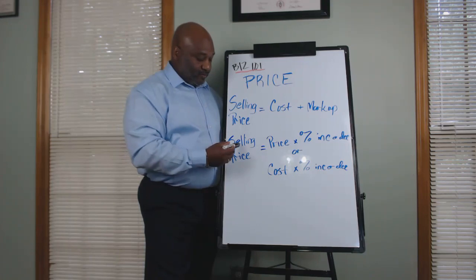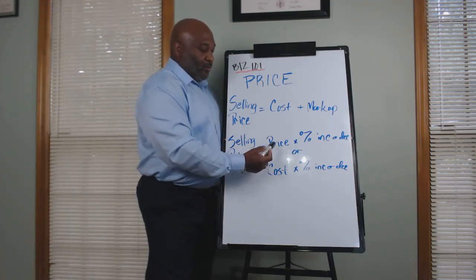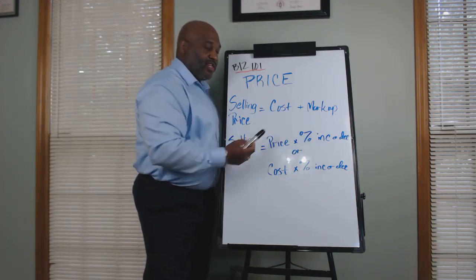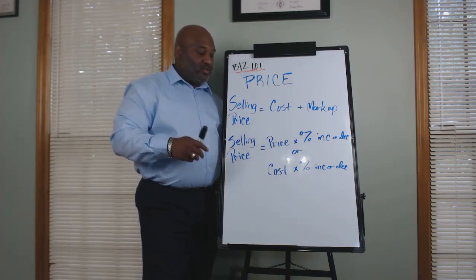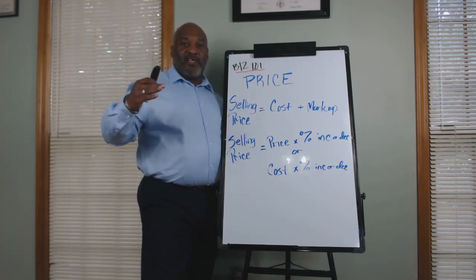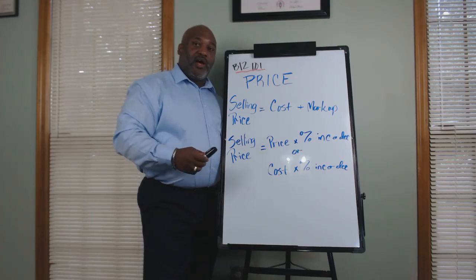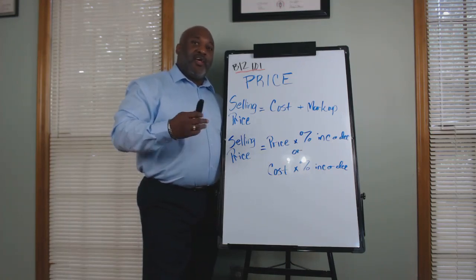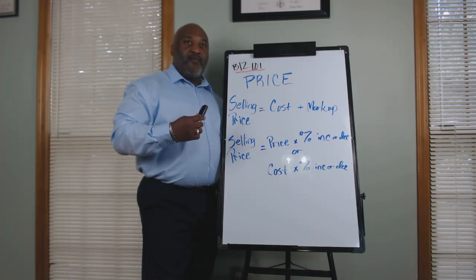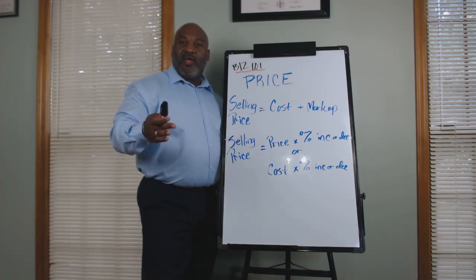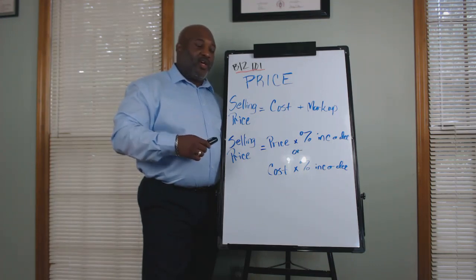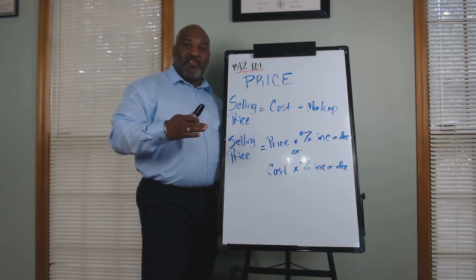The next example is looking at a percentage increase or decrease on the selling price. Using our previous example where we were selling bikes for $20, we're going to increase or decrease by 5% off that $20 to get our new price. An example where you may use that is where you may have an increase in cost — say the minimum wage went up 1% or 2% and you want to bring your prices up in relation to it.